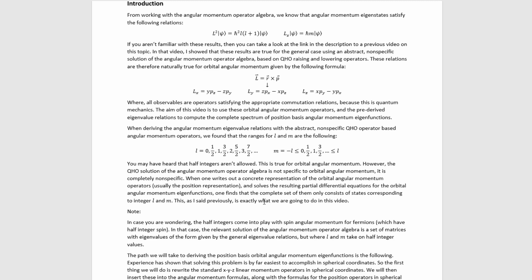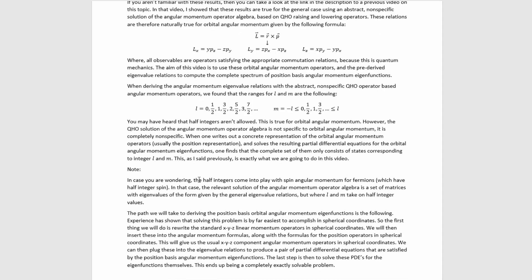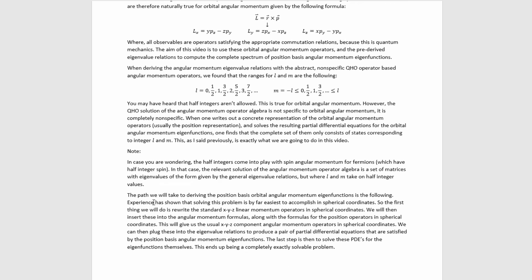You may have heard that half integers aren't allowed, and this is true for orbital angular momentum. However, the QHO solution of the angular momentum operator algebra is completely nonspecific. As a result, we got all the numbers that these values could possibly be in any context of angular momentum, not just orbital. The half integers come into play with spin angular momentum for fermions, which have half integer spin. In that case, the relevant solution uses matrices with L and M taking on half integer values.